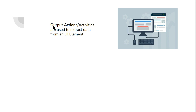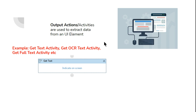Let's understand the meaning of output actions. Output actions means actions or activities that we use in UiPath which are used to extract data from a UI element. For example, if there is a website from which you want to extract some text, all of these activities are called output activities or output actions. Examples include the Get Text activity, Get OCR Text activity, and Get Full Text activity.